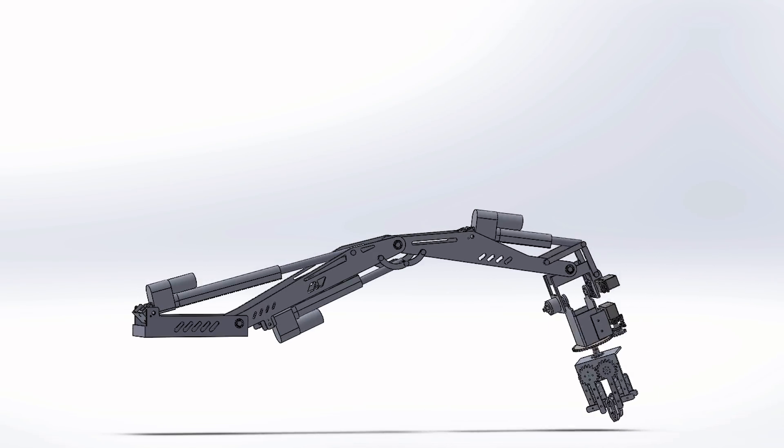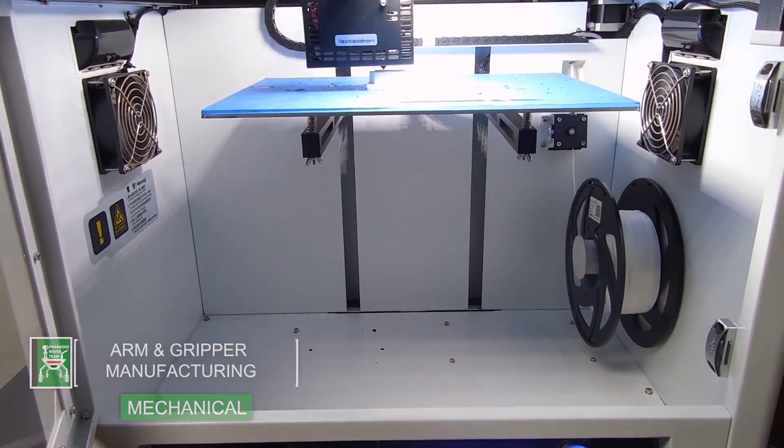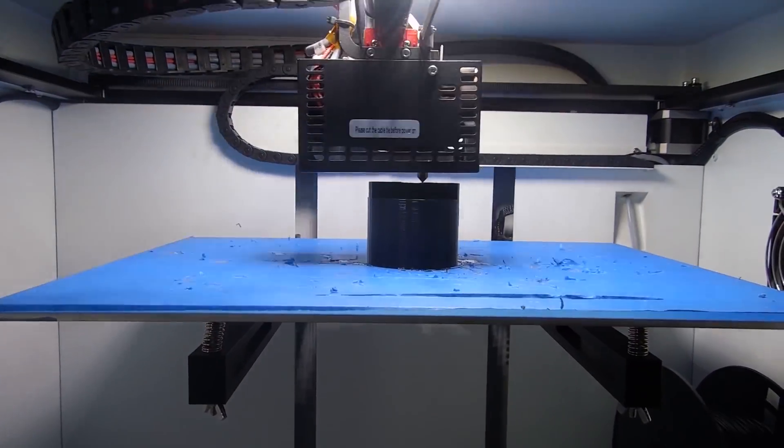A 6 degrees of freedom robotic arm was manufactured at the Arab organization for industrialization and the gripper was manufactured internally using our 3D printer.